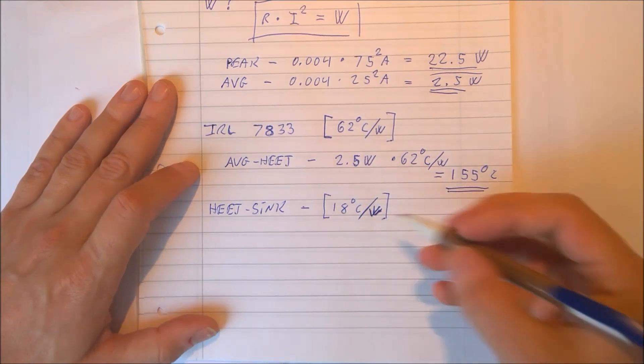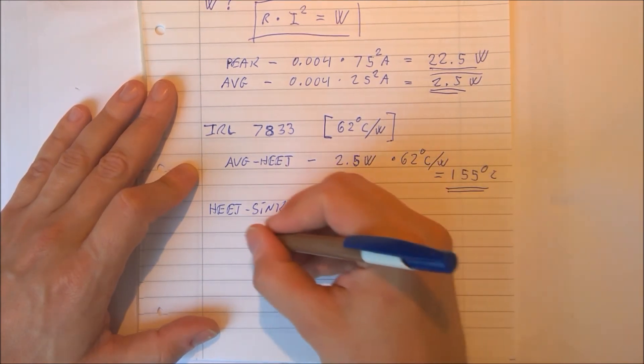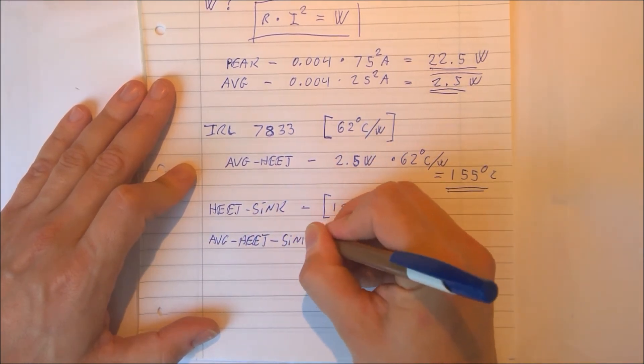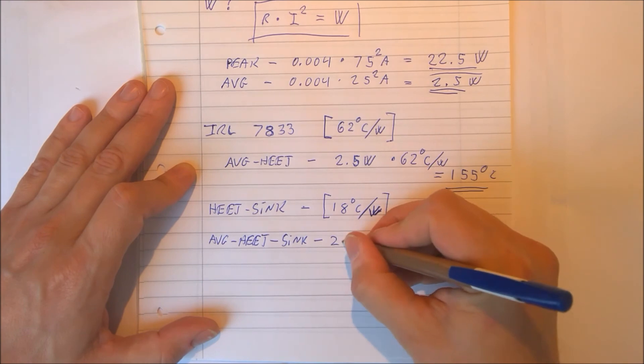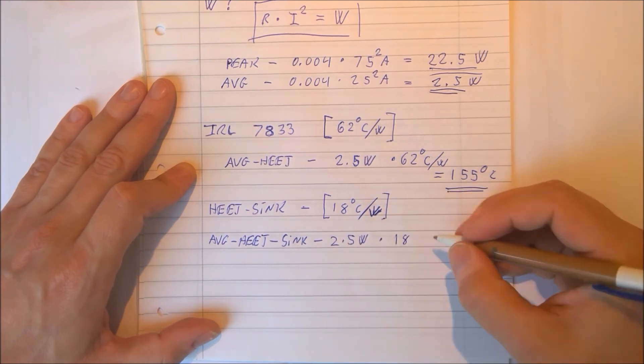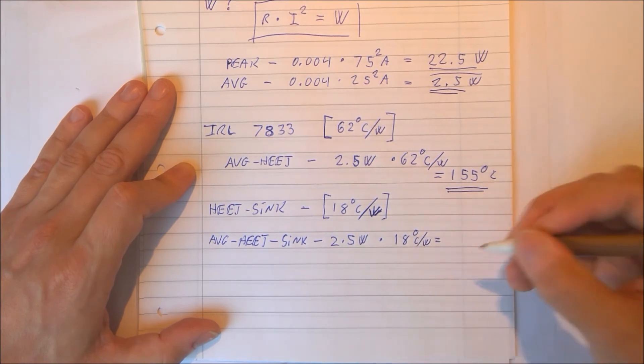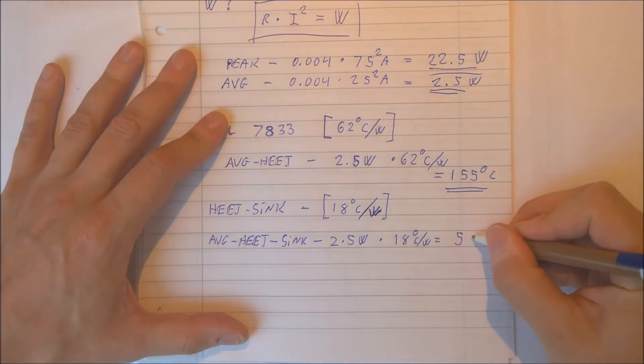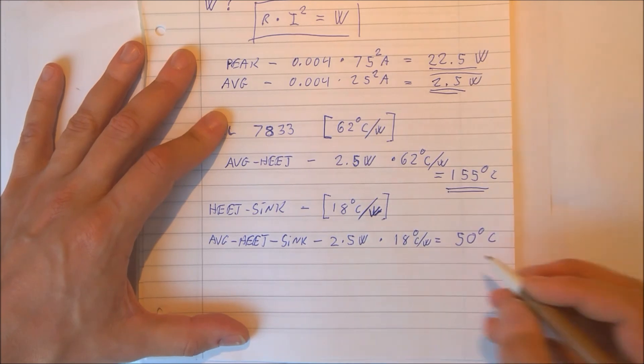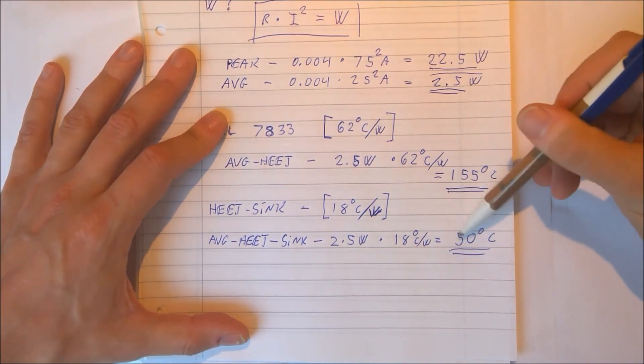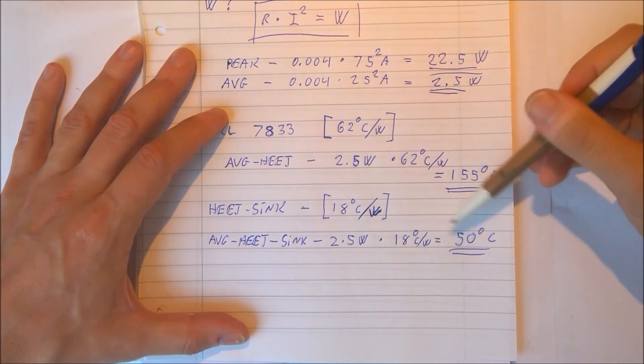So that instead, you can calculate that the average will be 2.5 watts times 18 degrees Celsius per watt. And that is 45 degrees Celsius. This is hot to touch but still acceptable.